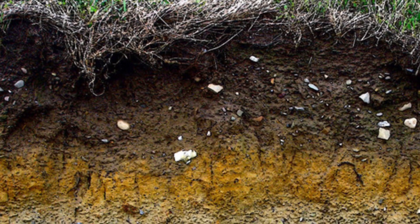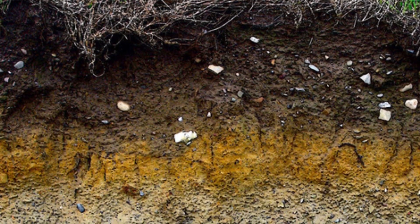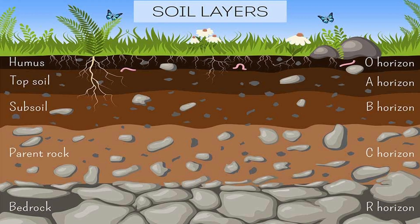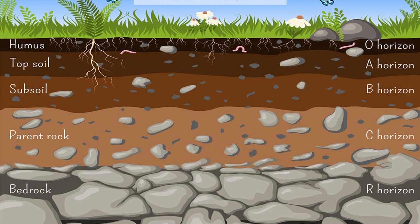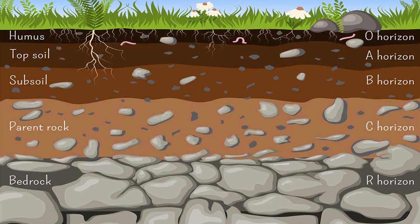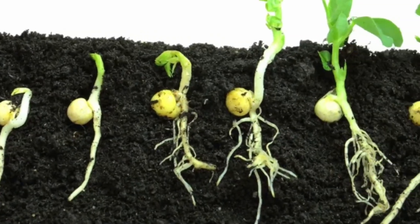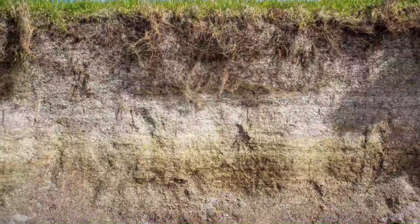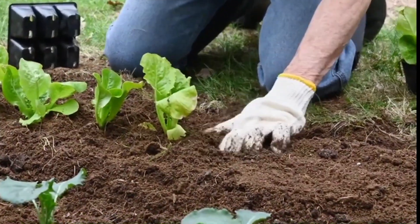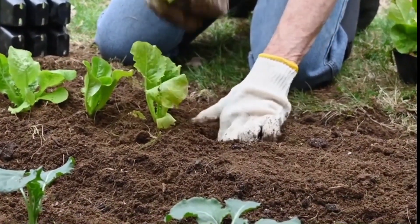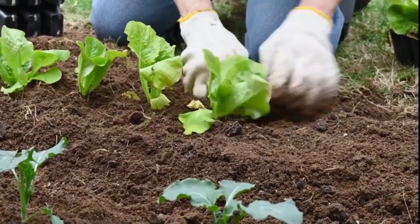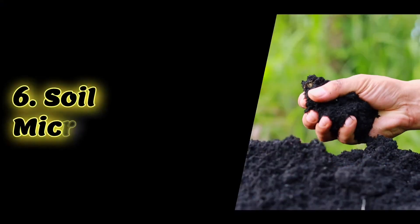Soil Horizons. Soil isn't just a uniform substance. It's composed of different layers, or horizons, each with unique characteristics. The topsoil is where most plant roots thrive, while the subsoil contains minerals leached from above. Understanding these layers is crucial for successful agriculture and gardening.